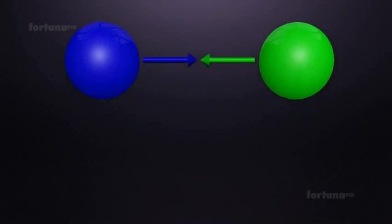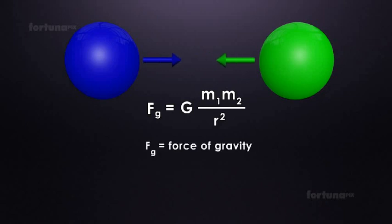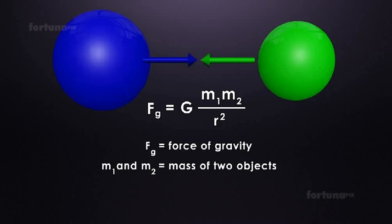Newton's Law of Gravitation can be expressed in an equation: Fg equals G multiplied by M1 multiplied by M2 divided by R squared, where Fg is the force of gravity between two objects of mass M1 and M2.